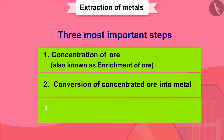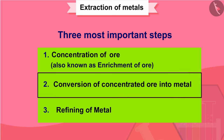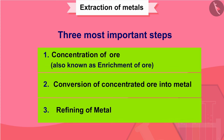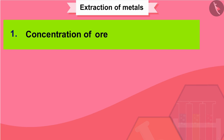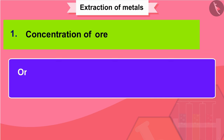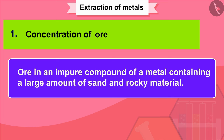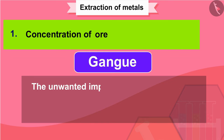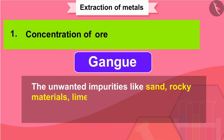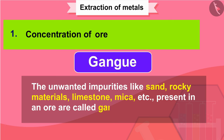We will now discuss each of these steps one by one. Concentration of ore: as we already know, ore is an impure compound of a metal containing a large amount of sand and rocky material. The unwanted impurities like sand, rocky materials, limestone, mica, etc., present in an ore are called gangue.